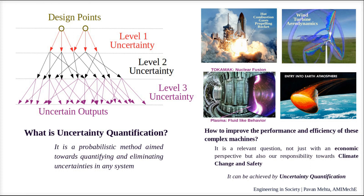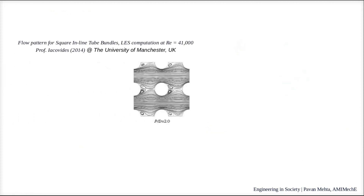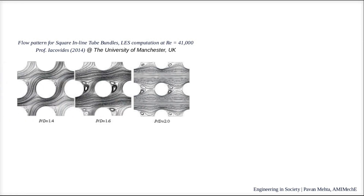This can be best demonstrated by an example. Consider a tube bundle system. Depending upon the distance between the two tubes, the flow can be along the mean flow direction or it can vary diagonally, with this diagonal flow switching in direction. It is important to determine the mean force across the tube for its structural integrity.